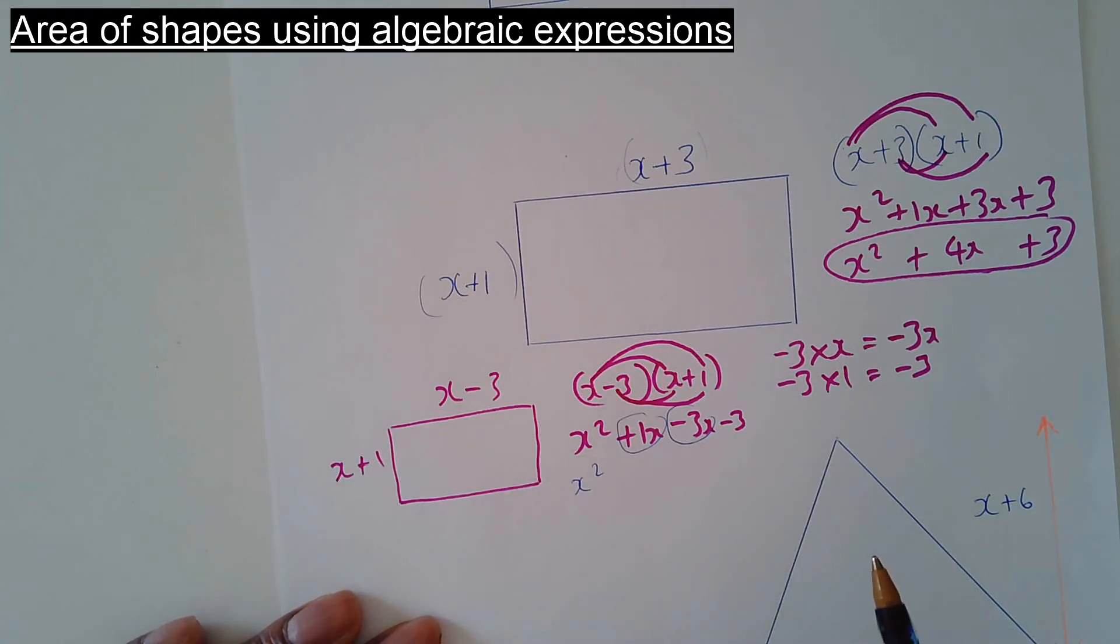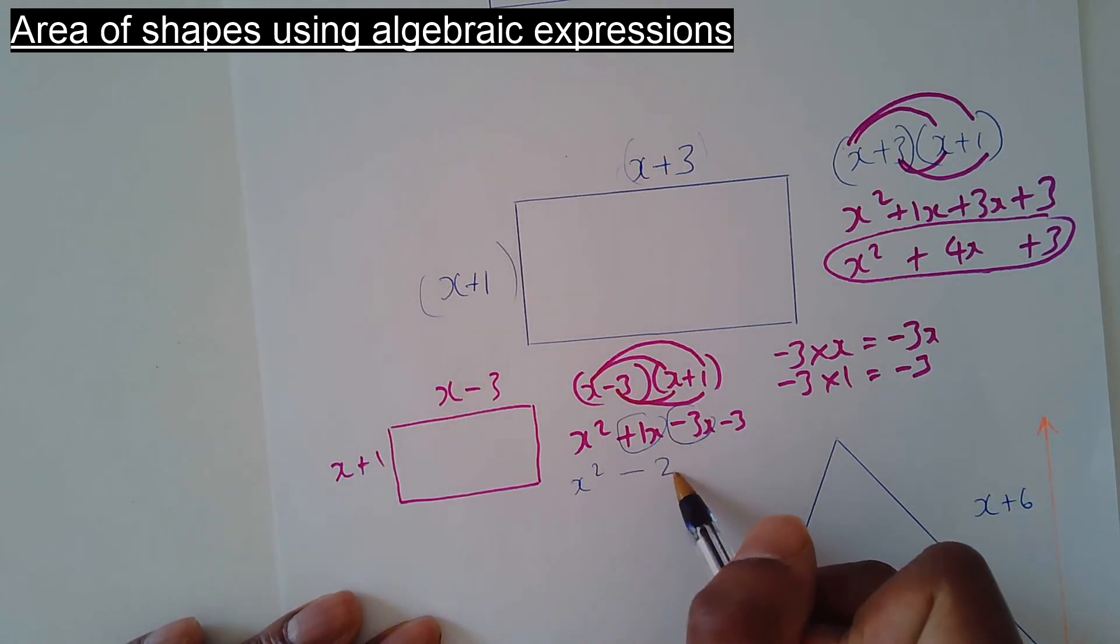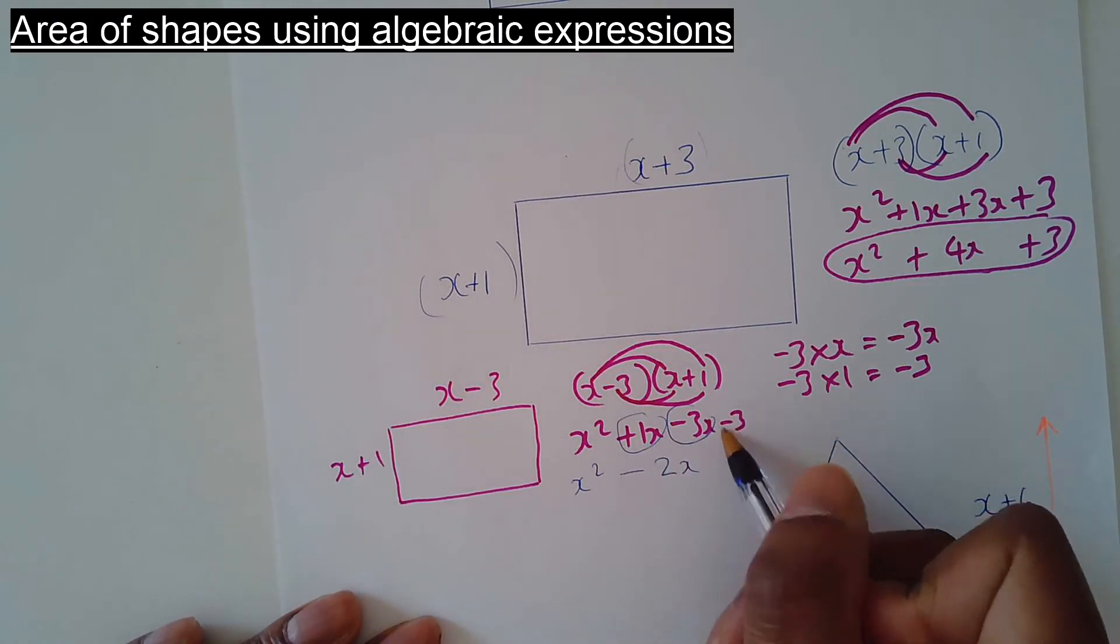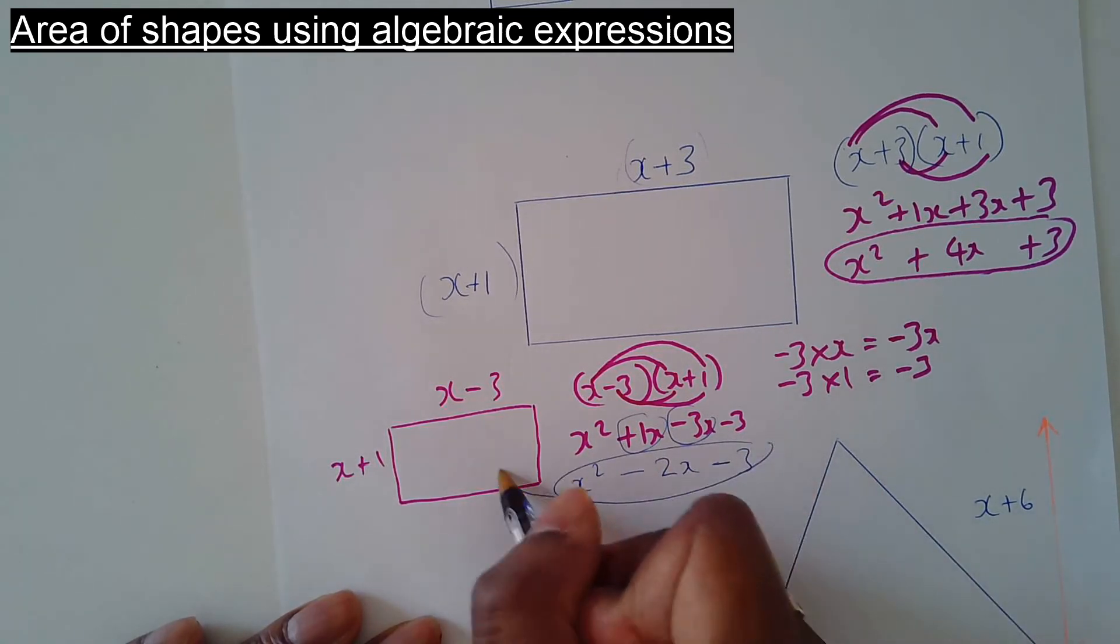1 take away 3 on the number line is minus 2x. And then you've got that minus 3 on the side by itself. So that's the area of this shape.